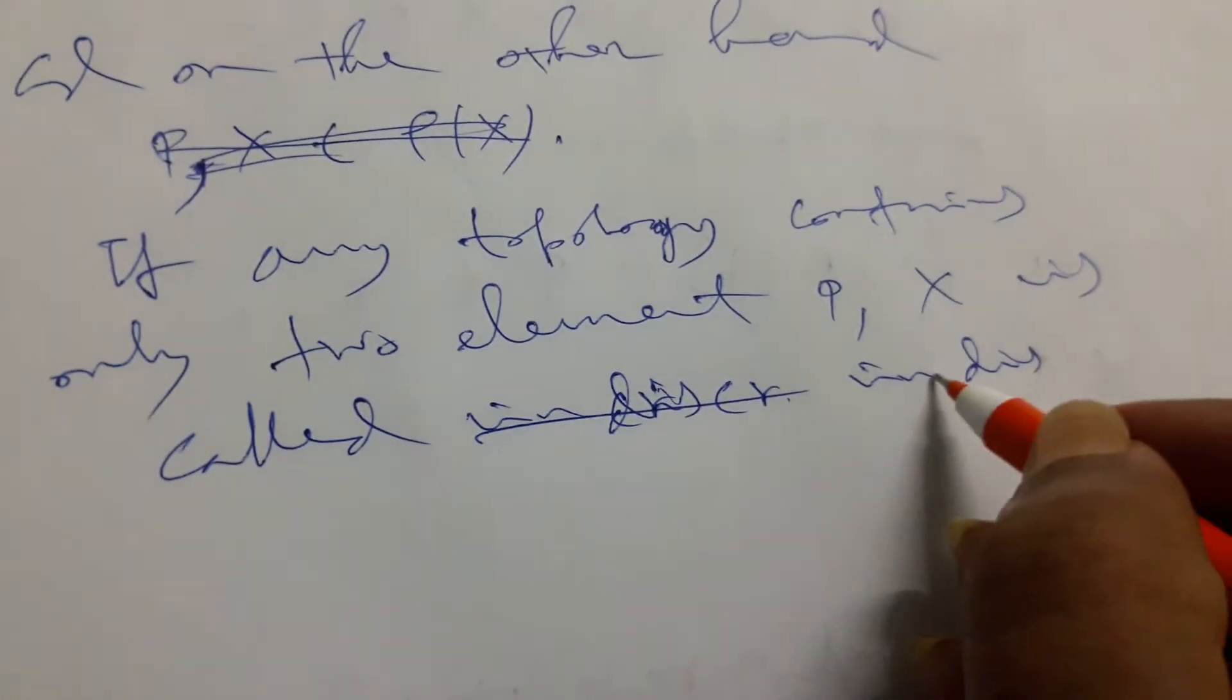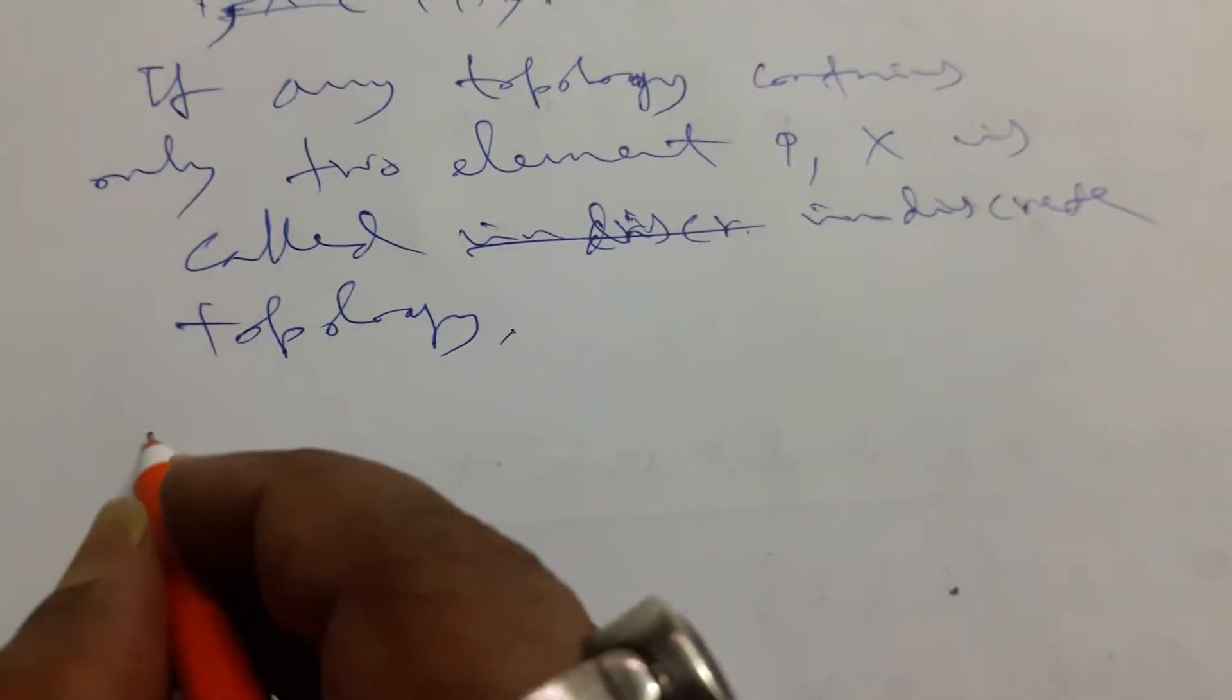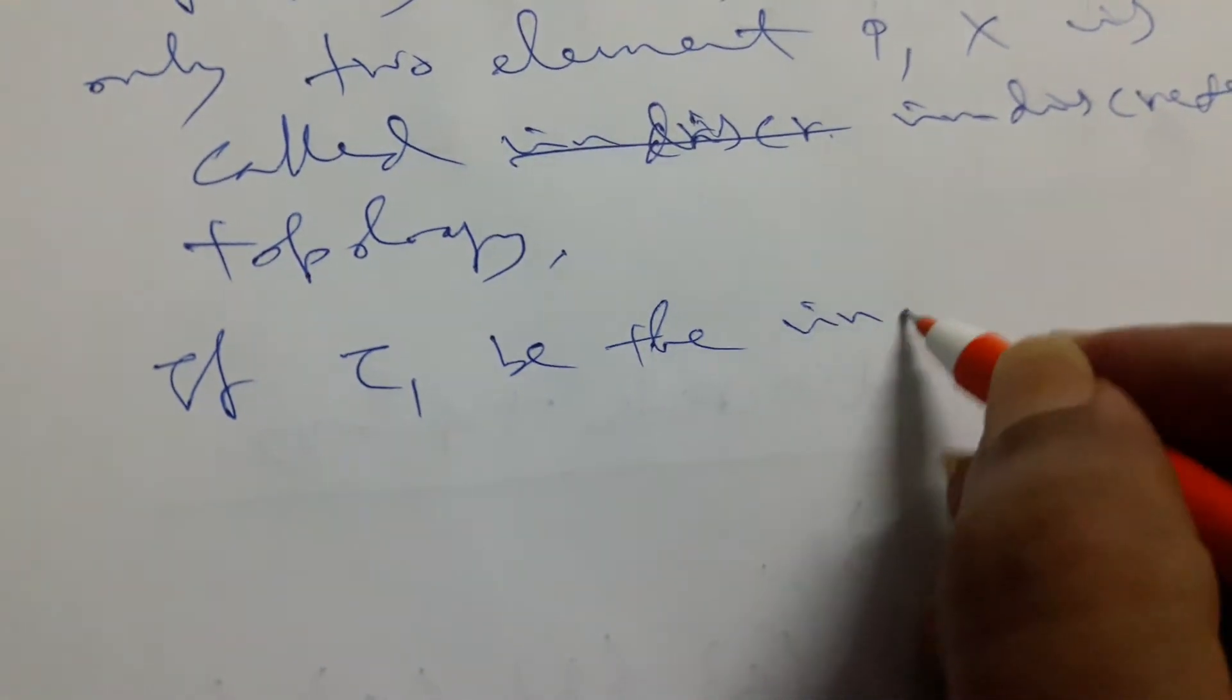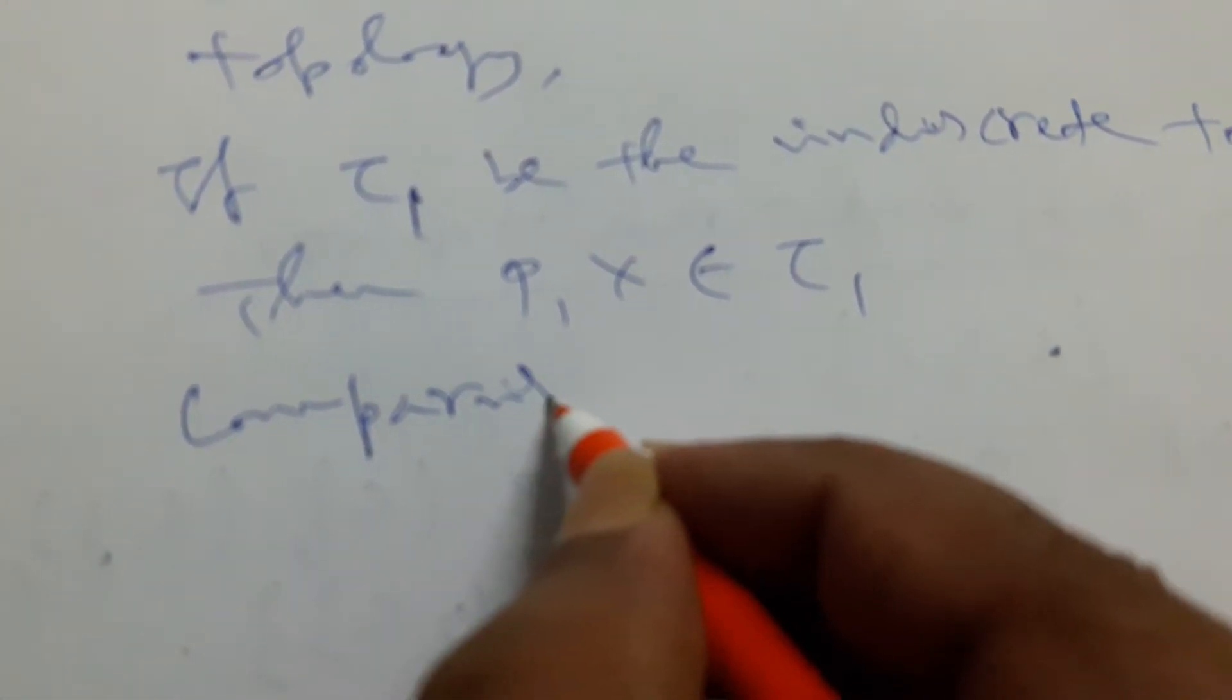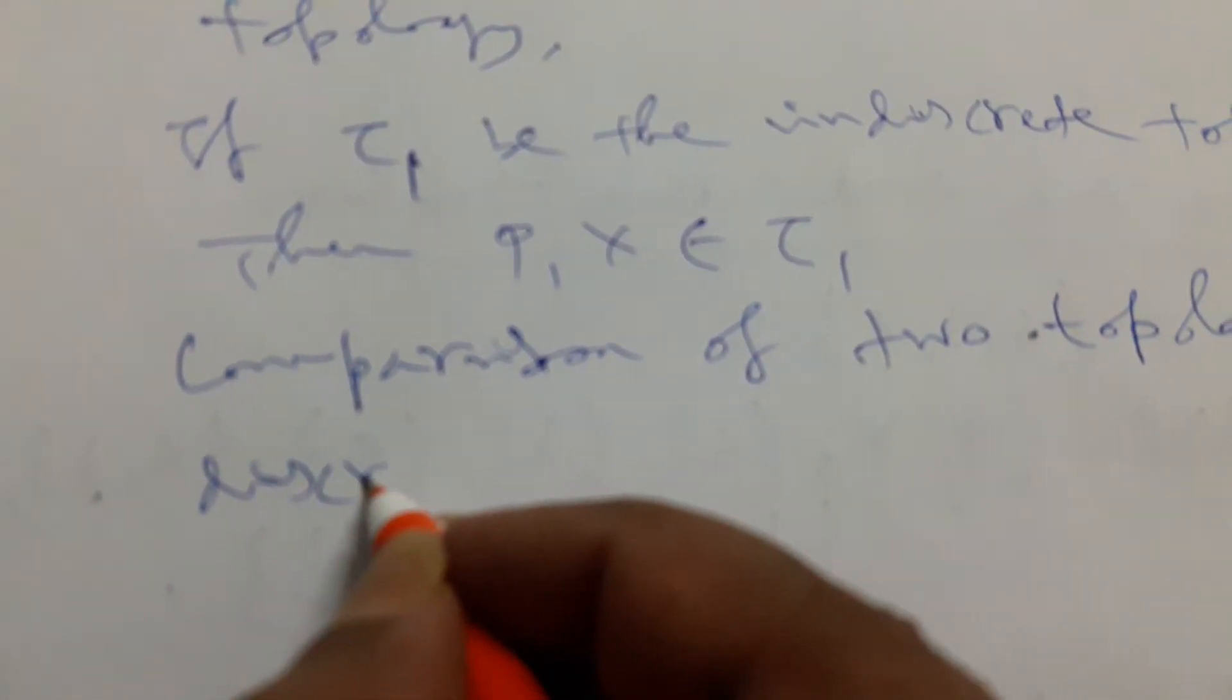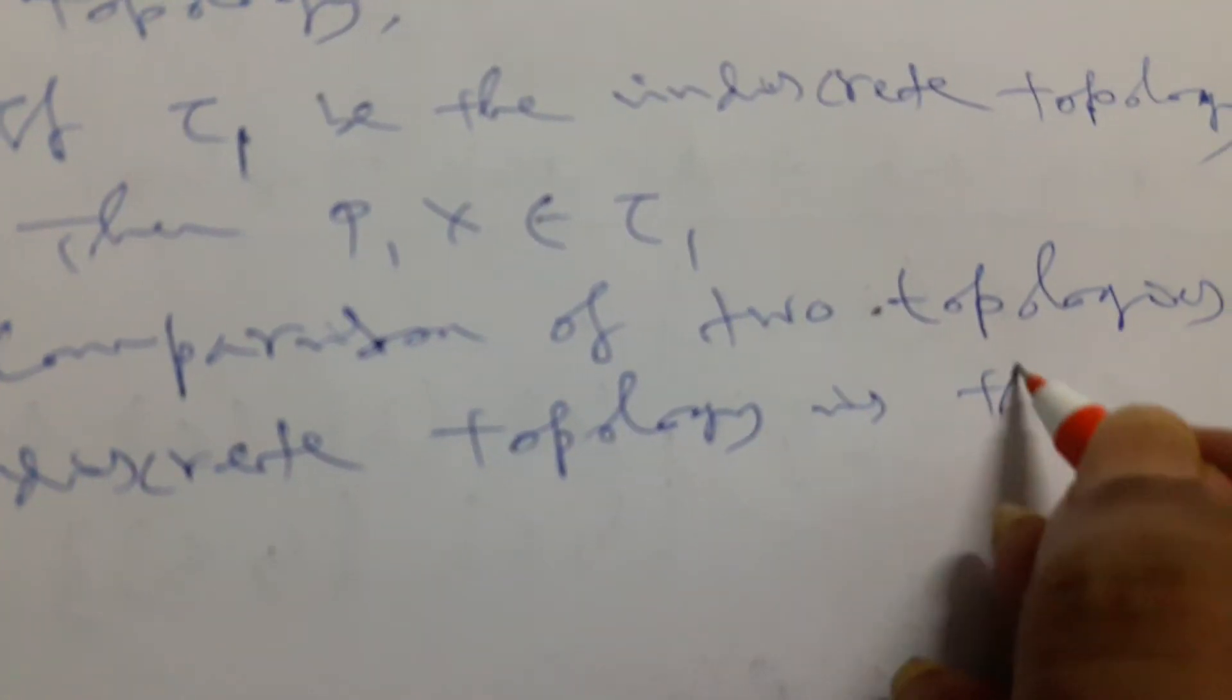If τ₁ is the indiscrete topology, then in comparison of two topologies, indiscrete topology is the weakest topology.